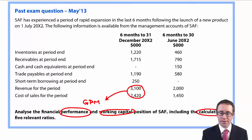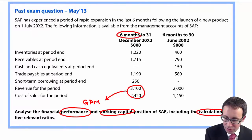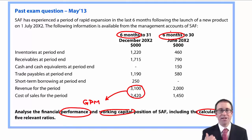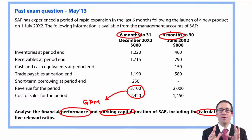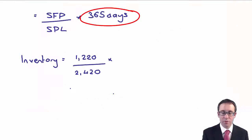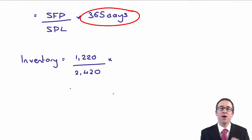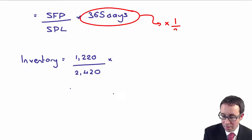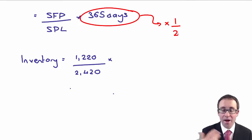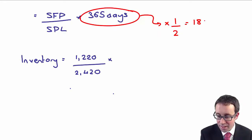The reason why this caught people out is because the results are for six months. That's brilliant from the examiner. Because you're looking at a six-month period, what you need to do when working out your inventory days is multiply 365 by half — to account for the fact that it's half a year — which gives you 182.5 days.